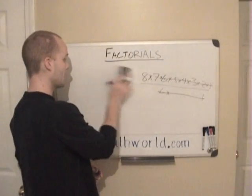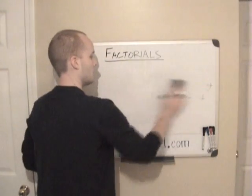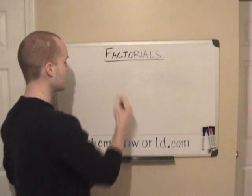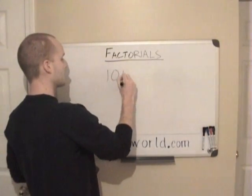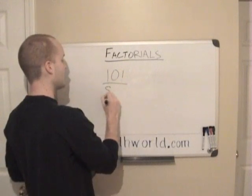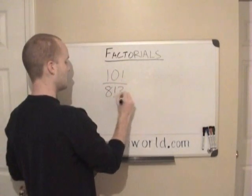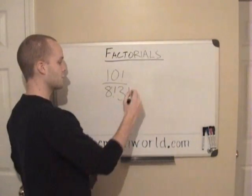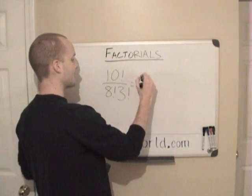And we'll do one last problem that you may see. And let's take a look at 10 factorial divided by 8 factorial times 3 factorial. So the first thing we want to do is, we want to write it out.